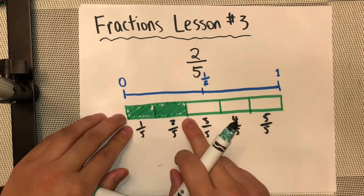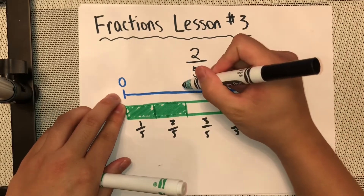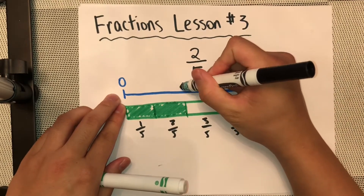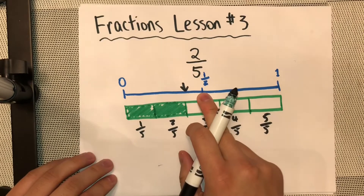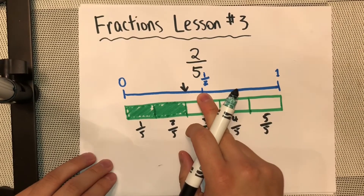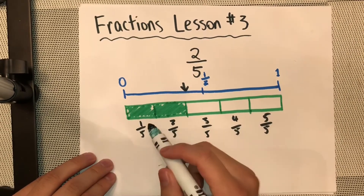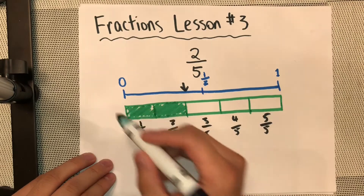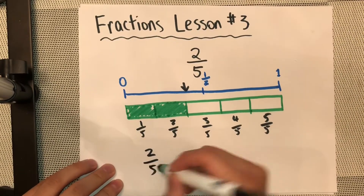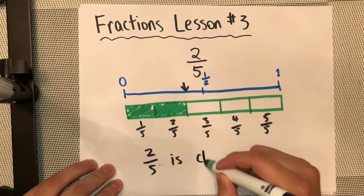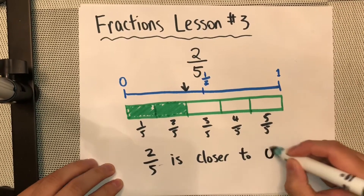So two fifths is on this side — it's about right here on our number line — and it's less than half. That means it's closer to 0. So 2/5 is closer to 0.